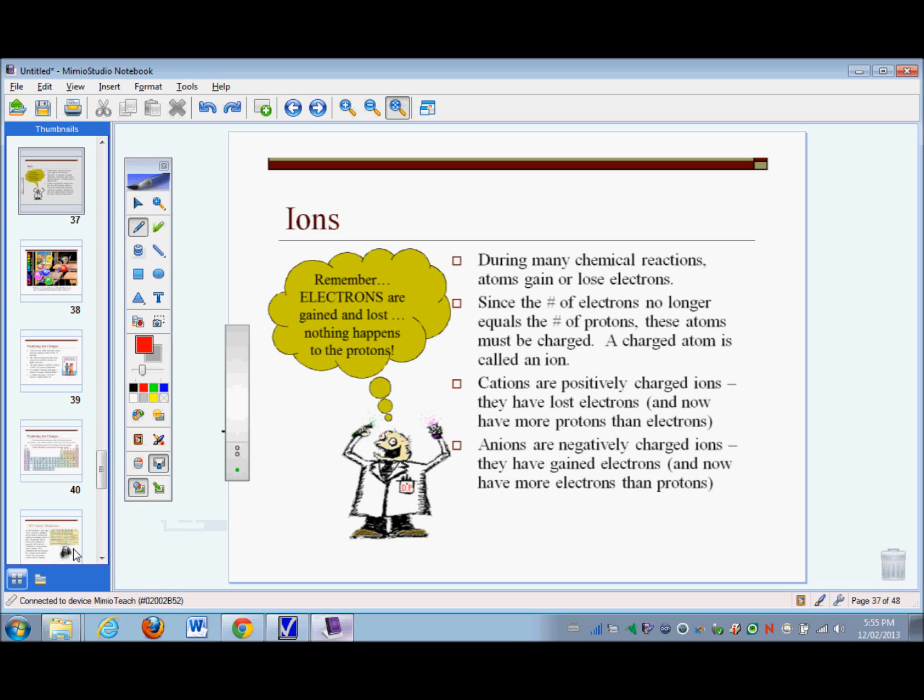In this video, we're going to take a quick look at ions. We'll define cations and anions, two types of ions. We'll also use the periodic table to predict the charges that form on different ions.